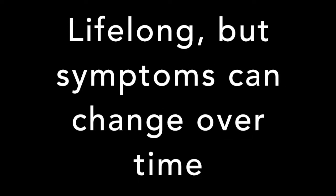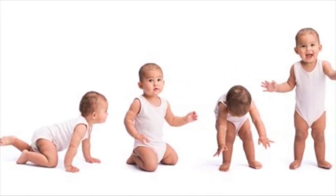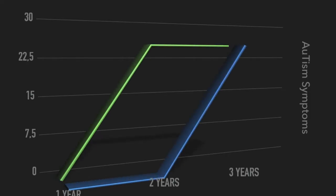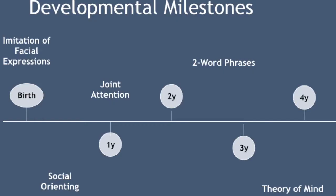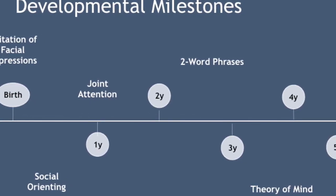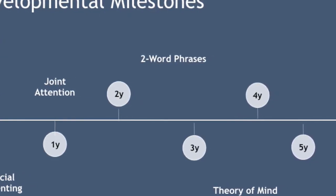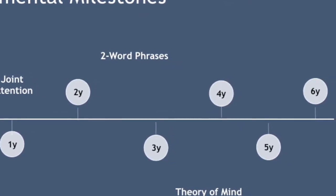Autism spectrum disorder is seen as a lifelong disorder, even though symptoms can change in their patterns and severity as a person develops. Most of the time, autism develops in one of two patterns: either children develop symptoms within the first year of life, known as early onset development, or children develop typically within the first two years and then a regression of earlier developed skills occurs. Children with autism often do not reach developmental milestones within the expected age range, and some children won't reach those milestones at all.